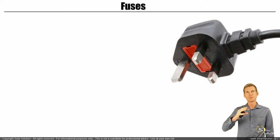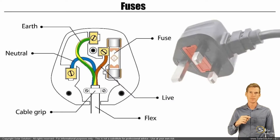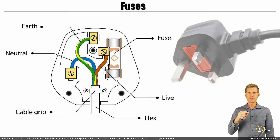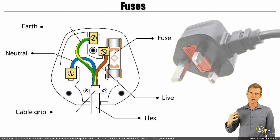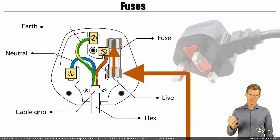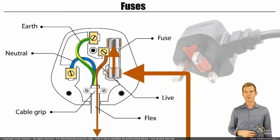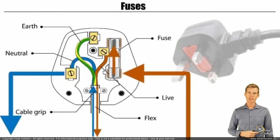I want to use this example to explain how a fuse would operate in basically any kind of system. When you look inside the plug, you'll see the three main connectors: earth, neutral, and live. The fuse is placed in series with your circuitry. Power arrives from the wall outlet through the live connector, travels through the fuse, and then towards the load — the appliance you're powering. The electricity comes back through the neutral connector.